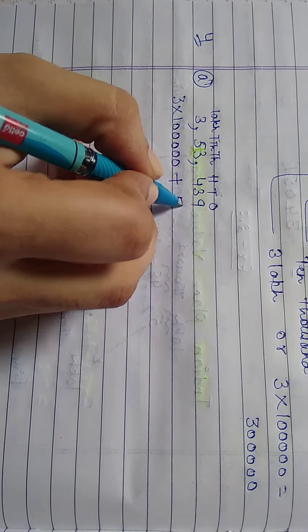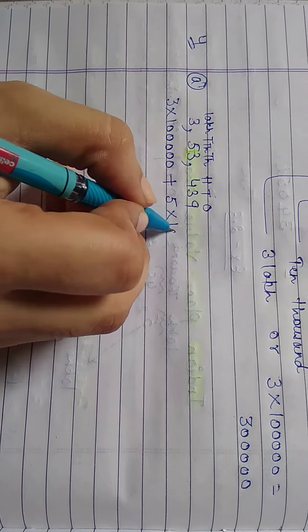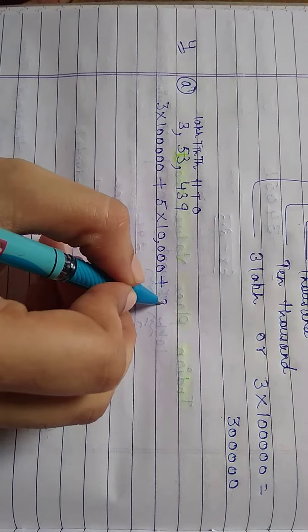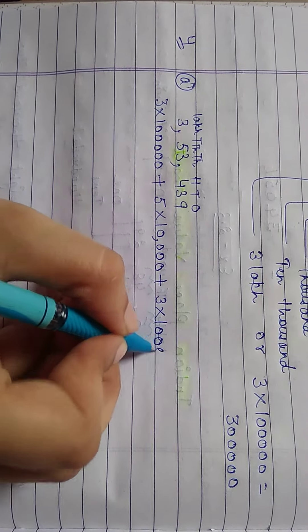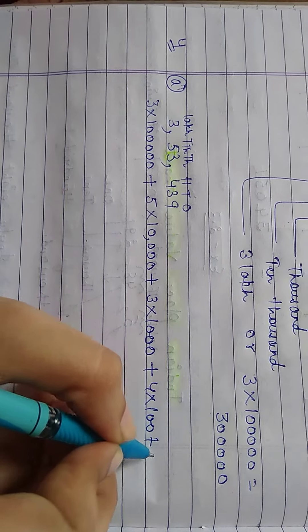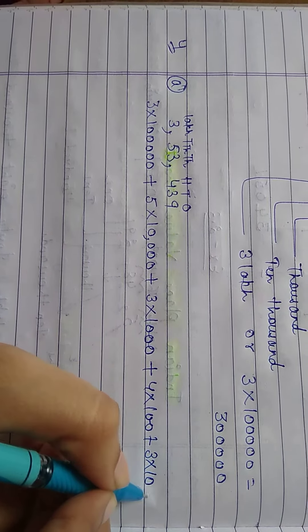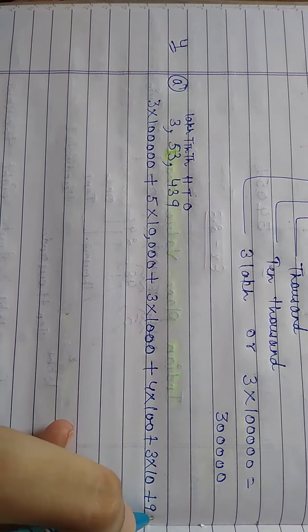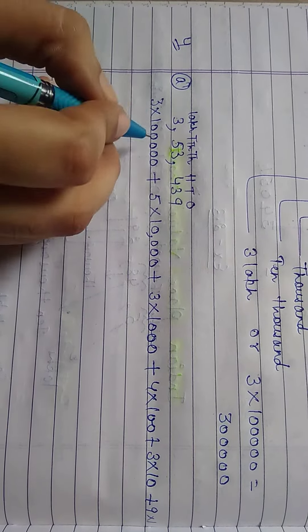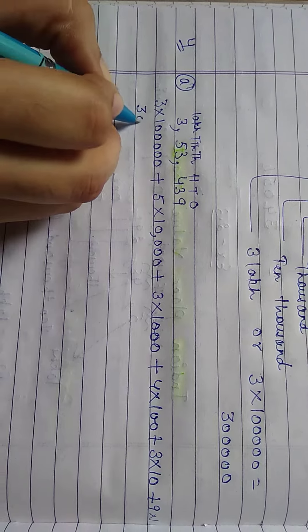5 is at 10,000, so that means 5 is multiplied by 10,000 plus 3 into 1000, 4 into 100, 3 into 10, 9 is at 1's place so we will multiply 9 by 1. 3 multiplied by 1 lakh, answer will be 3 lakh.